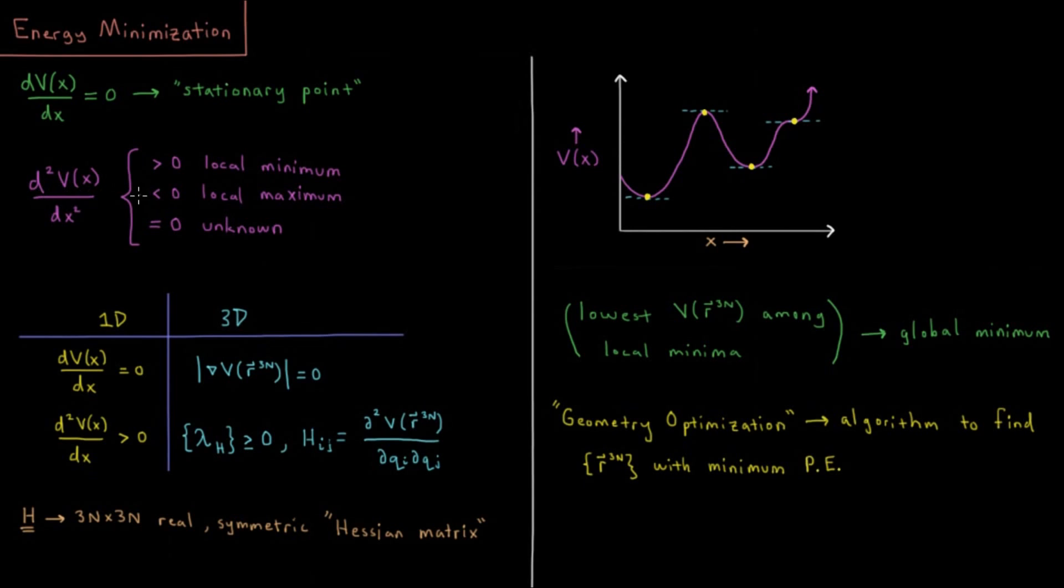If the second derivative is negative then the curvature is concave downward and we have what we call a local maximum at that critical point or stationary point there.